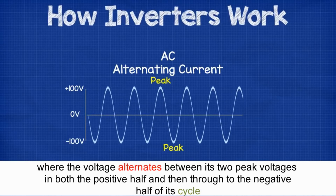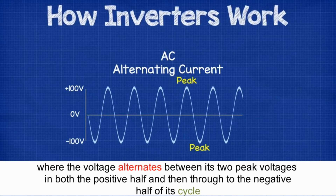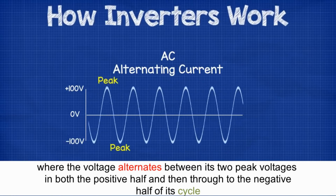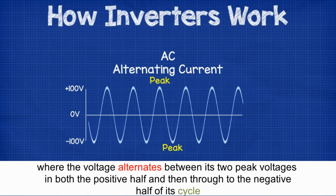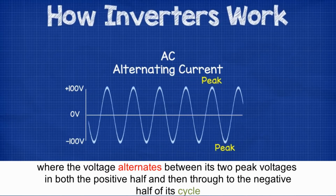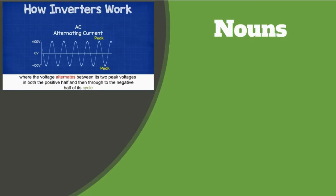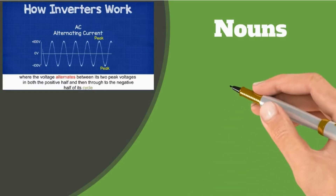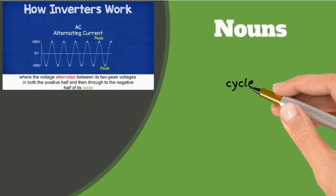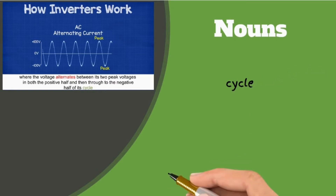Where the voltage alternates between its two peak voltages in both the positive half and then through to the negative half of its cycle. Cycle: a complete set of a repeated action.